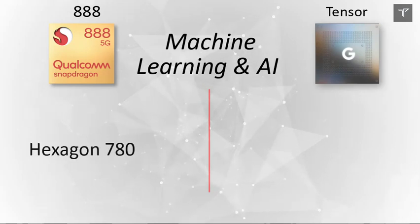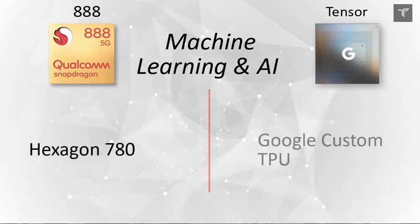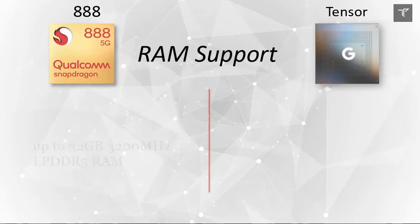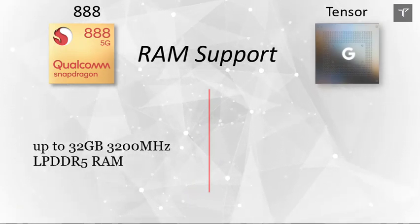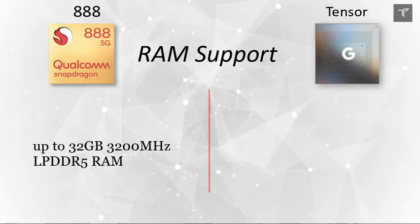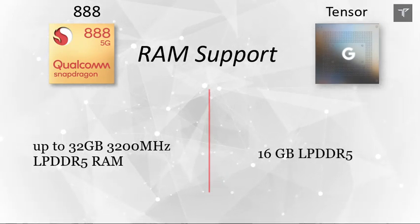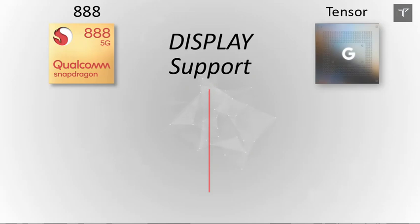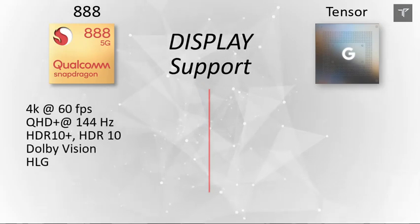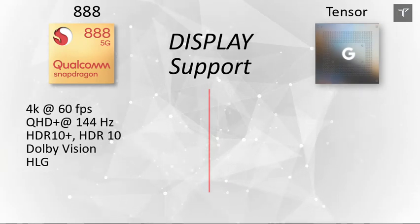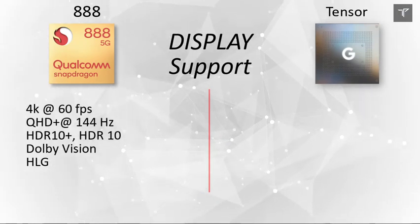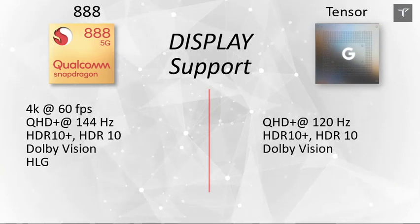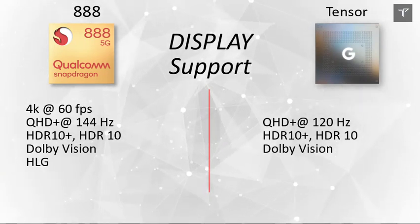For machine learning and AI, the Snapdragon 888 uses the Hexagon 780, whereas the Google Tensor uses a custom Tensor processing unit. On RAM support, the Snapdragon 888 supports up to 32 GB of LPDDR5, while the Tensor — currently available only in the Pixel 6 series — supports up to 16 GB of LPDDR5. For display, the Snapdragon supports 4K at 60 fps, QHD+ at 144 Hz, HDR10+, HDR10, and Dolby Vision, whereas the Tensor supports up to QHD+ at 120 Hz with HDR10 and HDR10+ support.